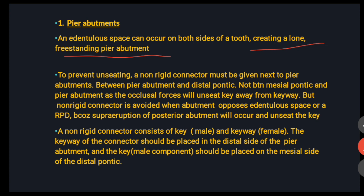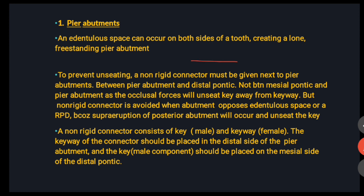Because the abutment is standing alone with two missing areas on either side, the chances of dislodgement of the FPD are very high. So you need to use a non-rigid connector. This non-rigid connector should be placed on the distal side — that is, between the pier abutment and the distal pontic.